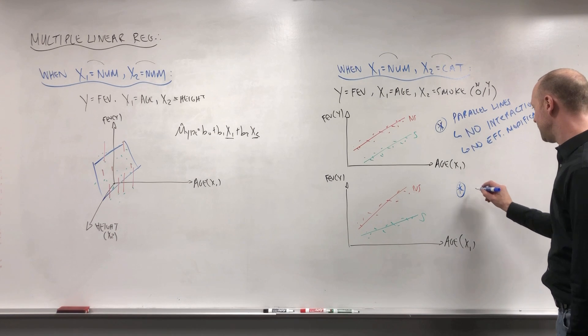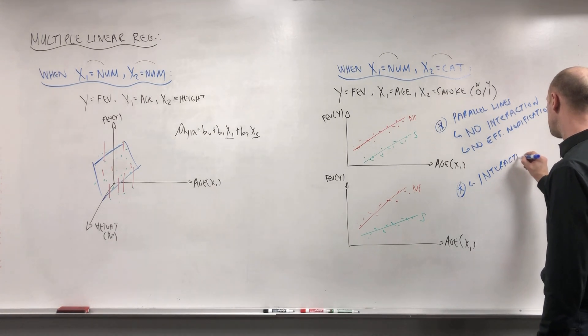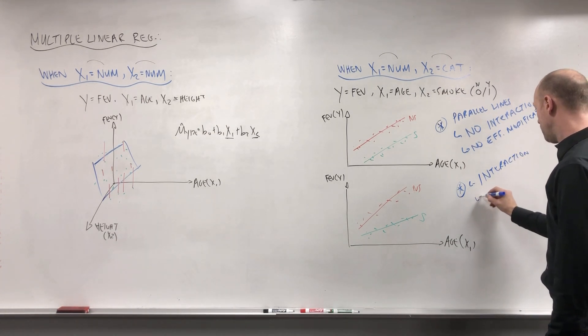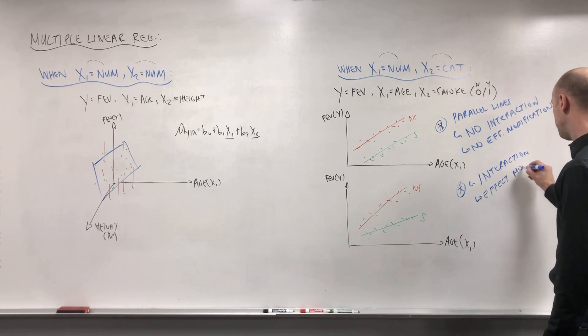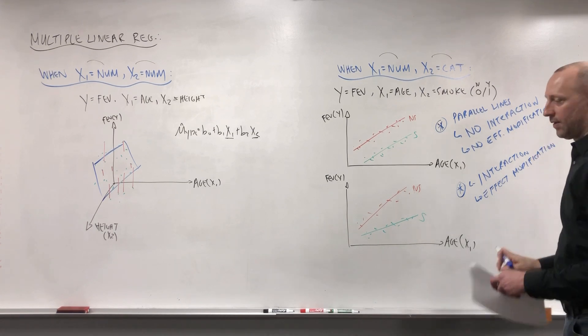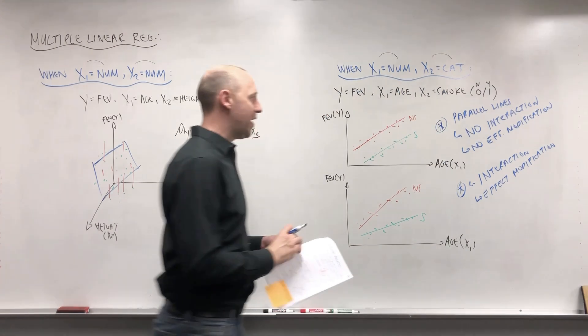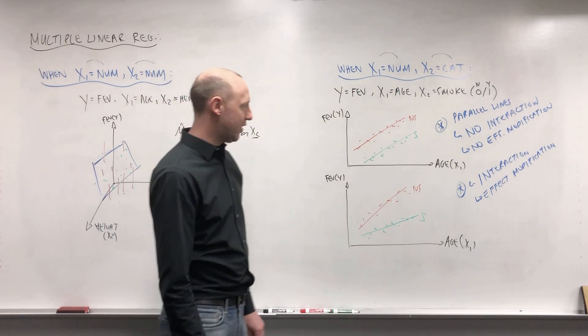parallel lines is no interaction or no effect modification. Non-parallel lines is interaction or effect modification. So they're operationalized in the same way. So this here is an example of interaction or effect modification. And again we'll expand on that as we progress through the course.